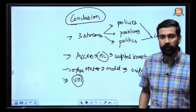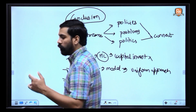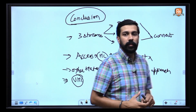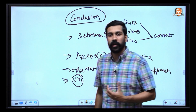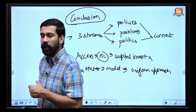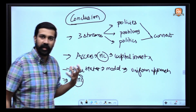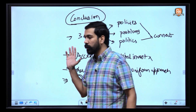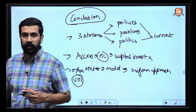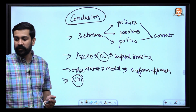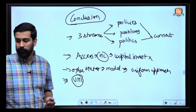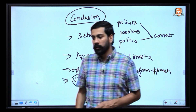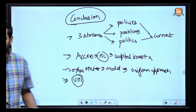In brief, this first article on reconfiguring urban primary healthcare covered: the flaws in the urban primary healthcare system, the case for mohalla clinics, the basic idea behind them, their strengths, their challenges, and the conclusion. Now moving on to the second article.